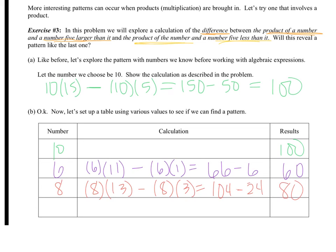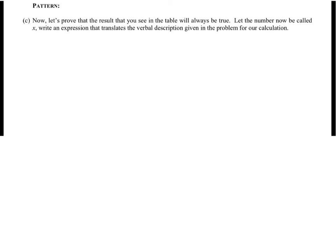And let's pick an easy one. Let's say that we do 2. So 2 times a number 5 more would be 7. Minus 2 times a number 5 less would be negative 3. 2 times 7 is 14 minus 2 times negative 3 is negative 6, which means I actually have a double negative. So it's 20. So the pattern for that one is you went from 10 to 100, and 6 to 60, and 8 to 80, and 2 to 20. So it's actually 10 times the original.